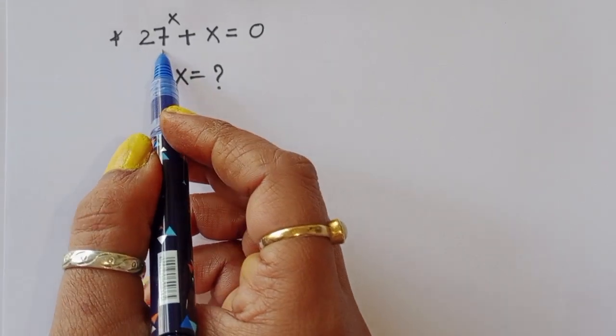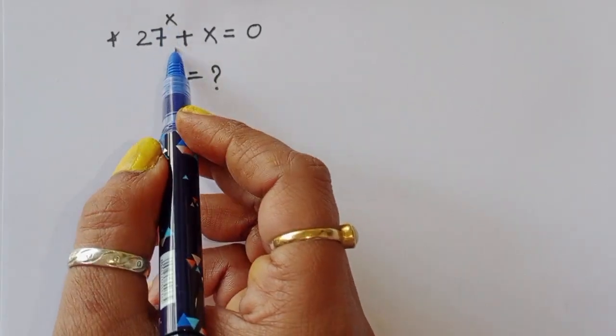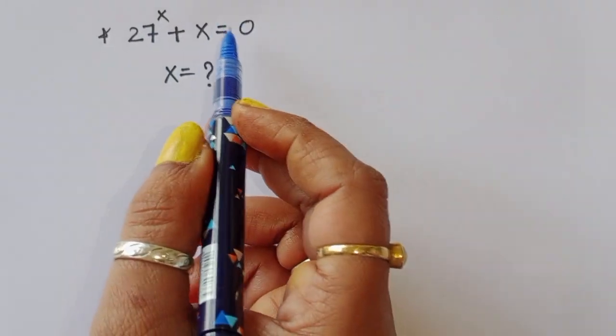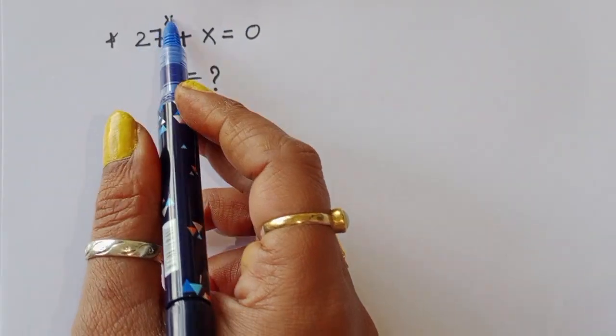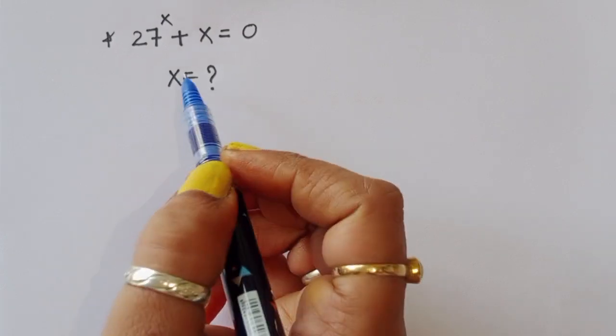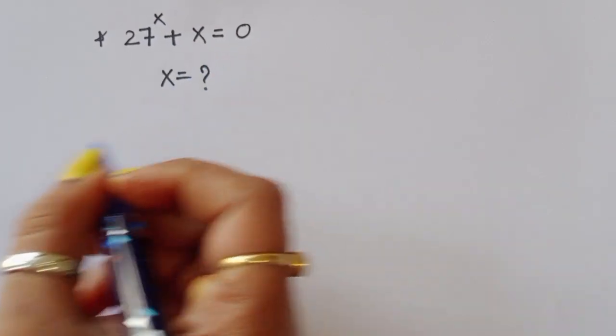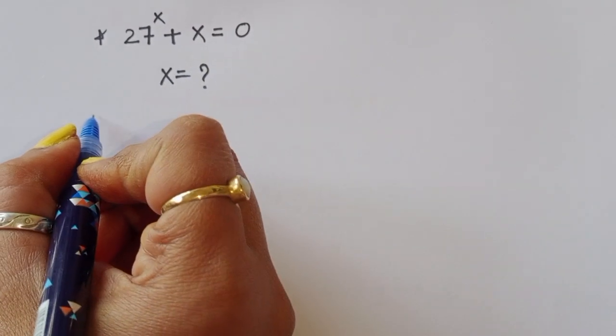The question is: 27 power x plus x is equal to 0. We have to find out the value of x. Let's see the solution.